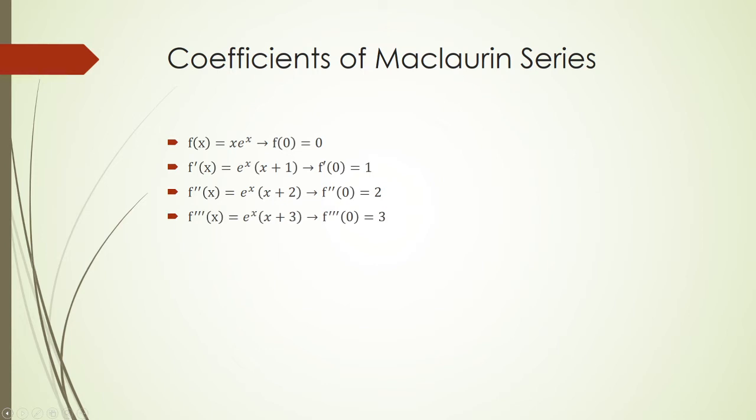And then same thing with f triple prime of 0 is 3, and as that continues, we can find the formula for the k-th derivative evaluated at x equals 0, well that's just k.